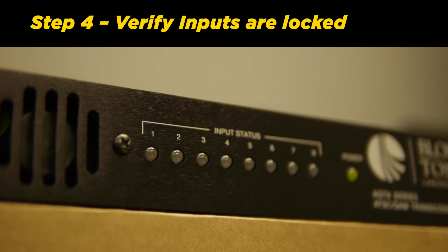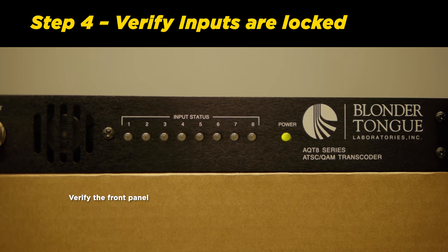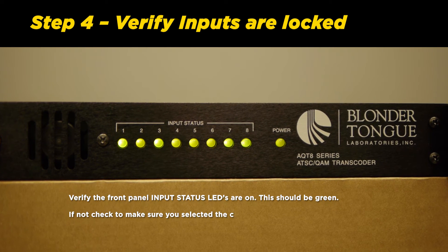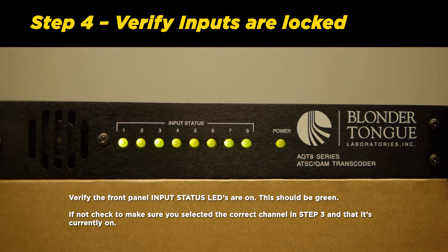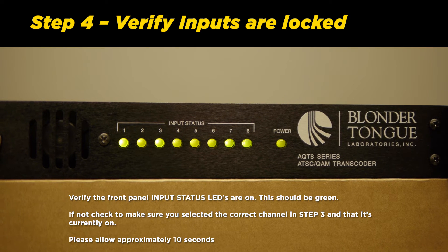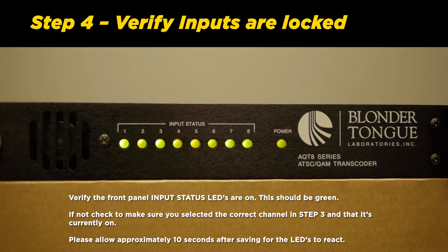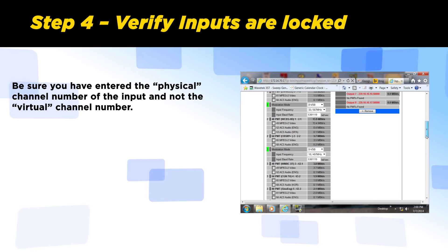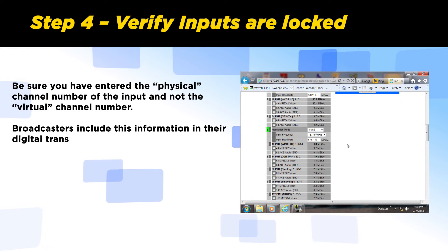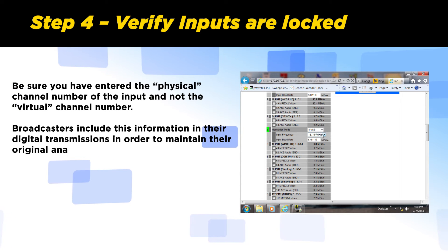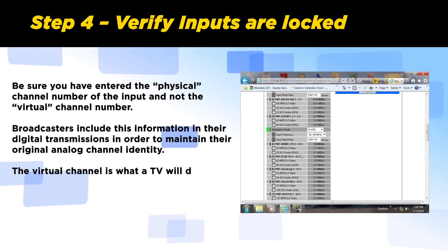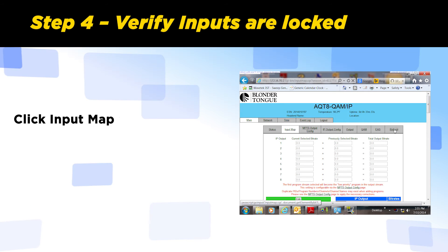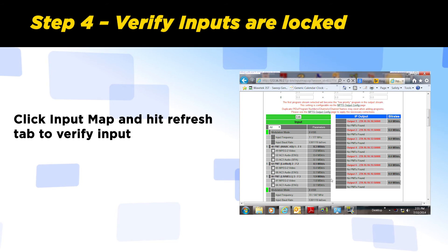Step 4: Verify inputs are locked. Verify that the front panel input status LEDs are on — they should be green. If not, check that you selected the correct channel in Step 3 and that it is currently broadcasting. Allow approximately 10 seconds after saving for the LEDs to react. Be sure you have entered the physical channel numbers, not the virtual channel numbers. Broadcasters include virtual channel information in their digital transmissions to maintain original analog channel identities; the virtual channel is what the TV displays and in most cases will not match the RF channel it is broadcast on. Click Input Map and hit the Refresh tab to verify the input channel data.